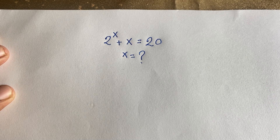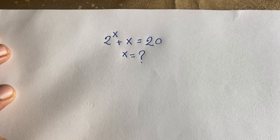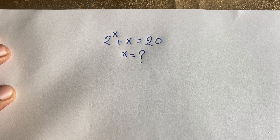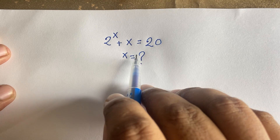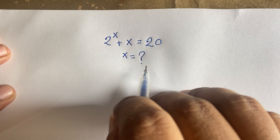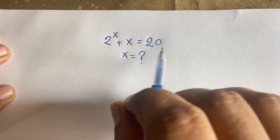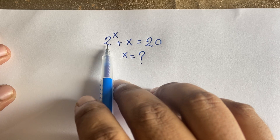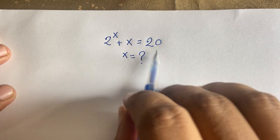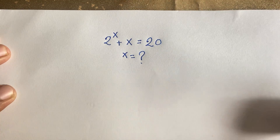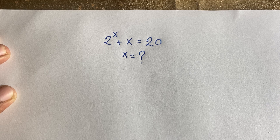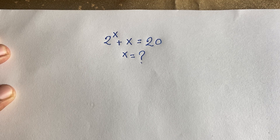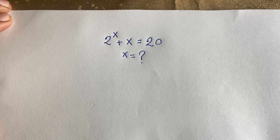Hello everyone. In this video we solve this interesting math question: 2 to the power x plus x is equal to 20. How to solve this? First, if x equals 1, then 2^1 + 1 = 3, not 20. If x equals 2, then we get 6, not 20. If x equals 4, this is interesting because 2 to the power 4 is 16, plus 4 is 20. Yes! So you can easily see x equals 4, but let's solve this properly as a math olympiad question.